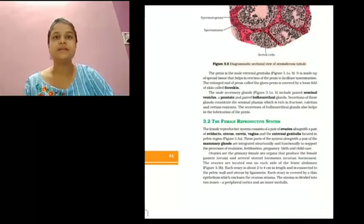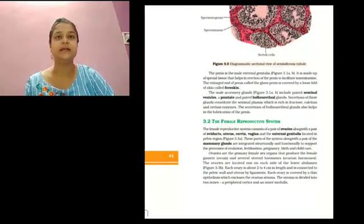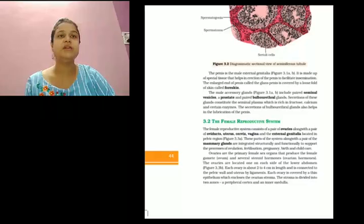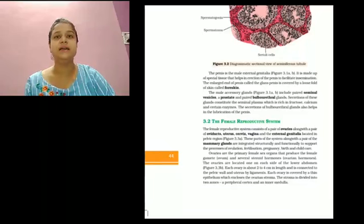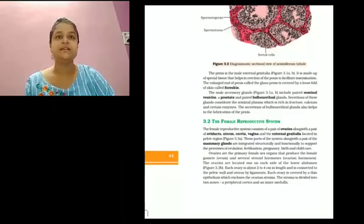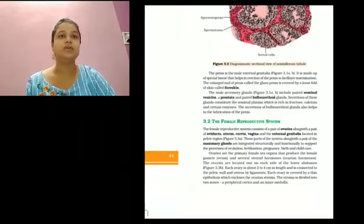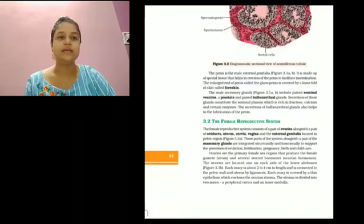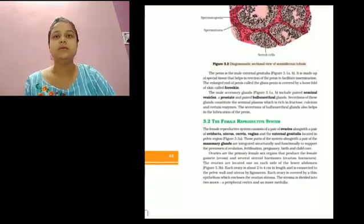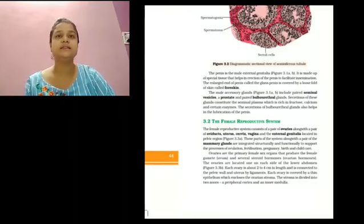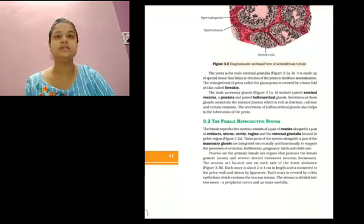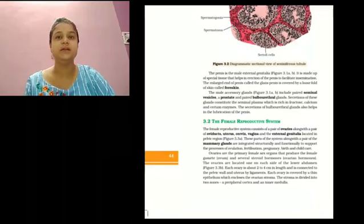The prostate gland secretes a slightly alkaline milky fluid. This helps in the survival of sperm in the acidic vaginal environment. Secretion also improves the motility of the sperm. The bulbourethral glands secrete a lubricant for the penis and neutralize any residual acidity in the urethra.